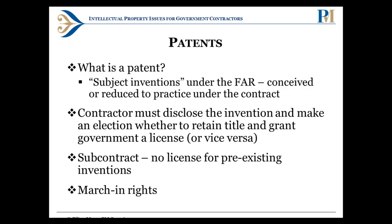The fourth category of IP is patents. Patent rights can only be obtained by filing an application with the USPTO — there are no common law patent protections like those I described for other areas of IP. For a patent you need a patent lawyer and must file a patent application with the USPTO. Patent law issues do come up in the context of government contracts, and this is where I'll turn things over to Si.